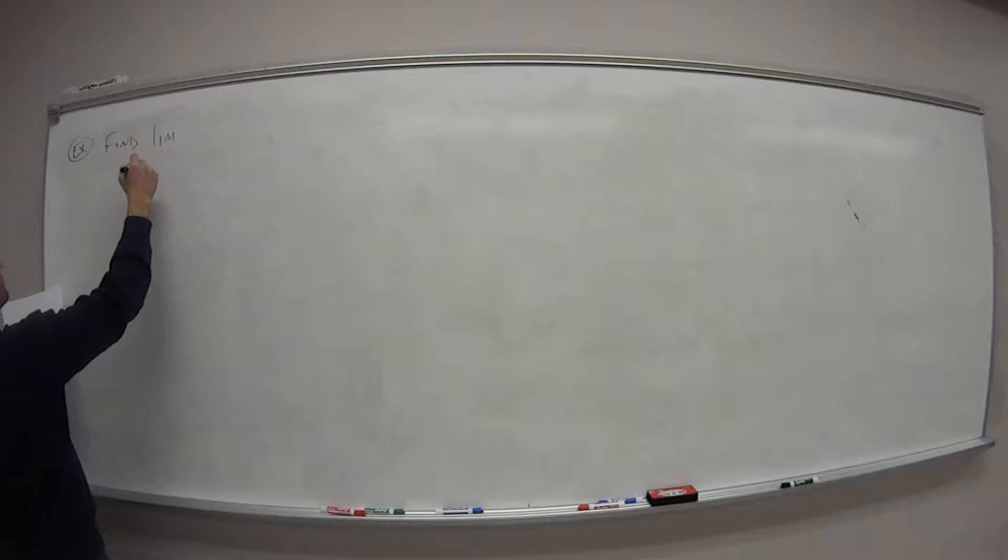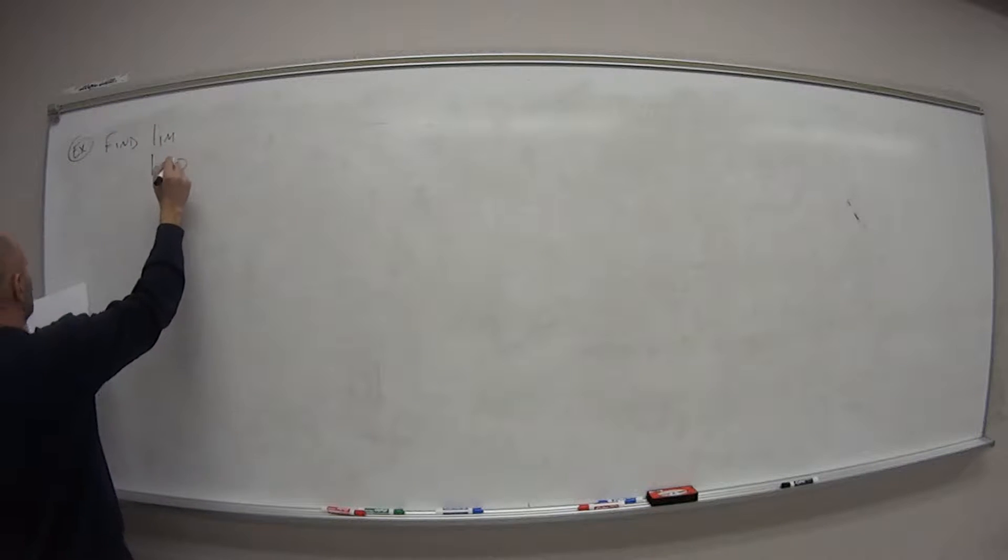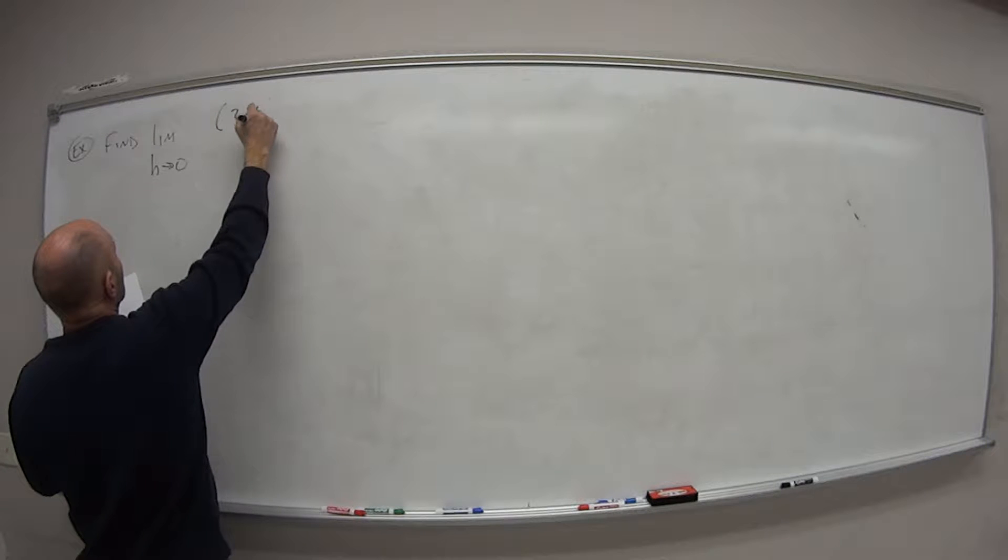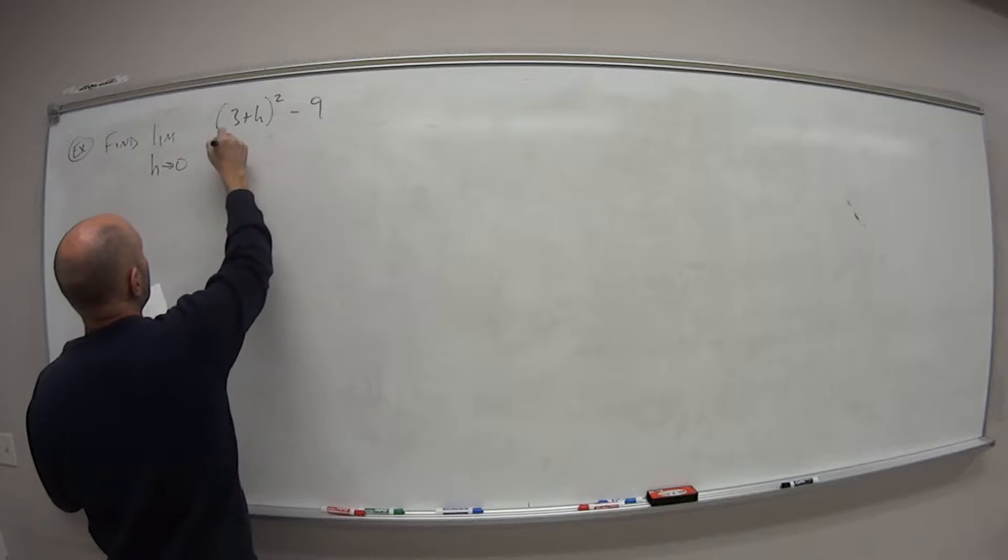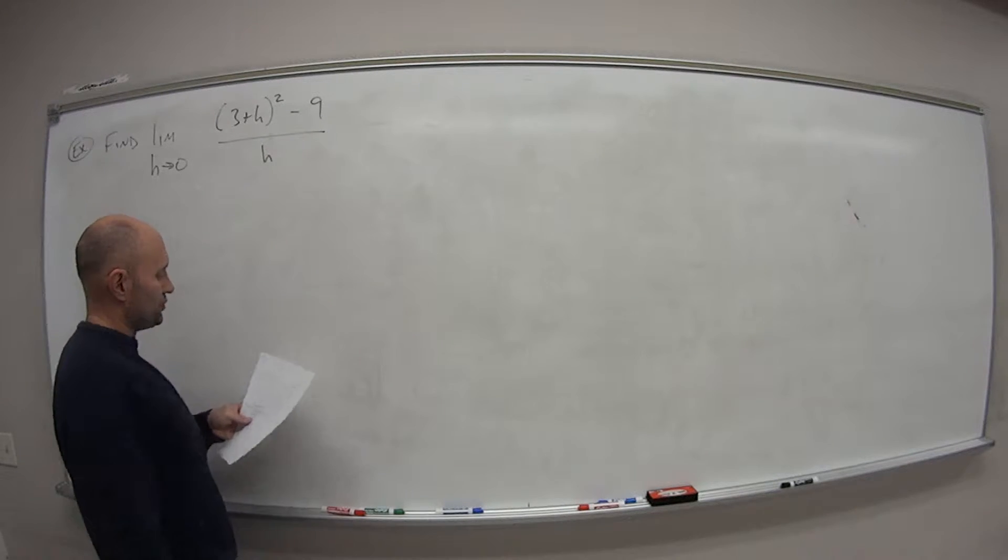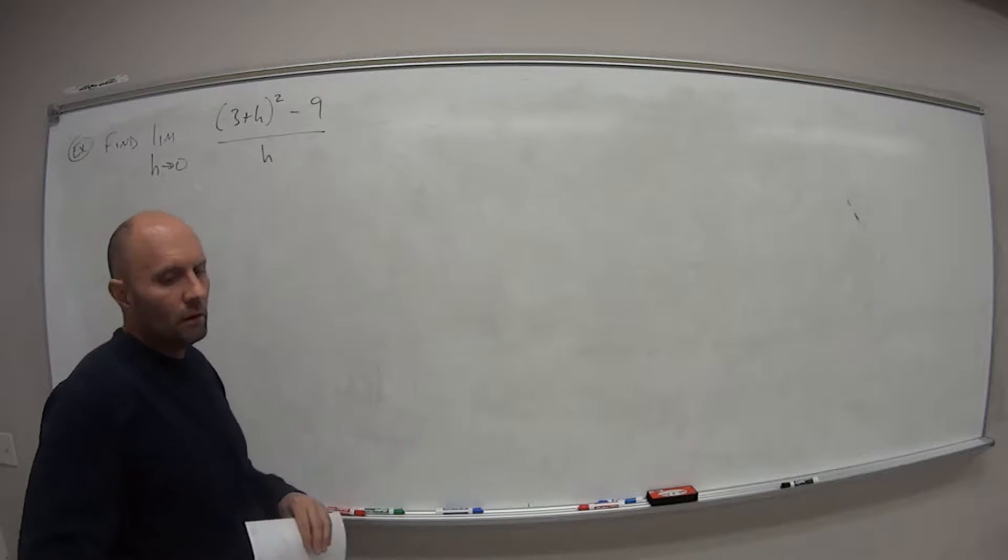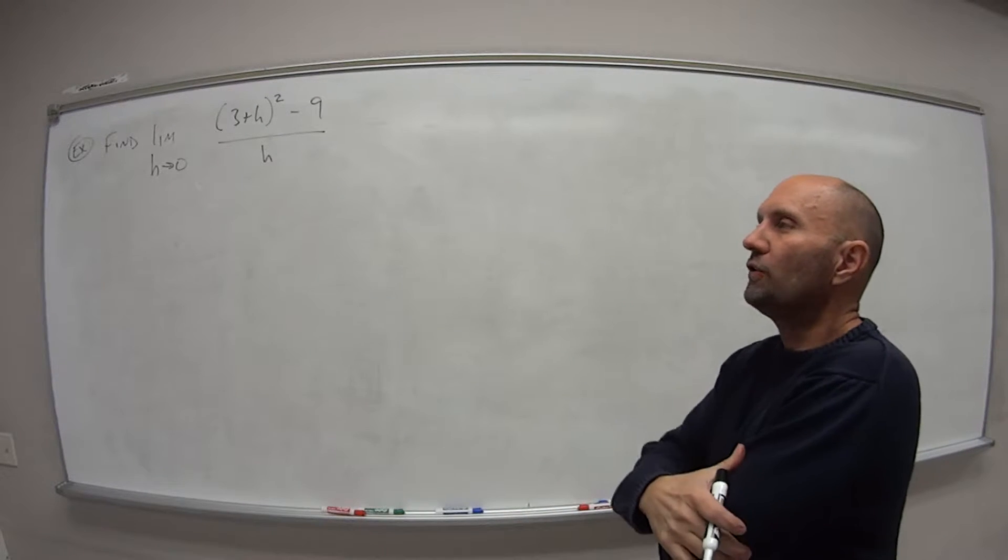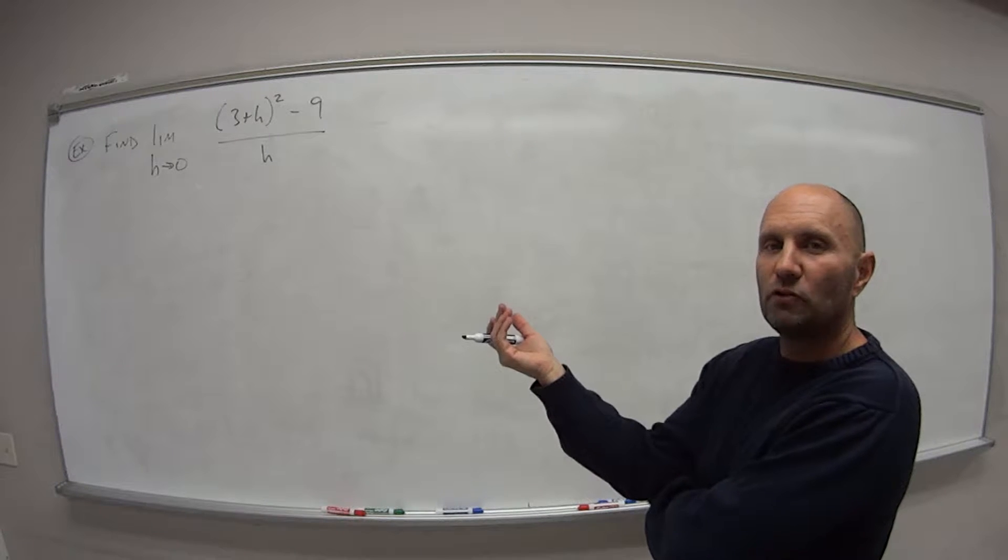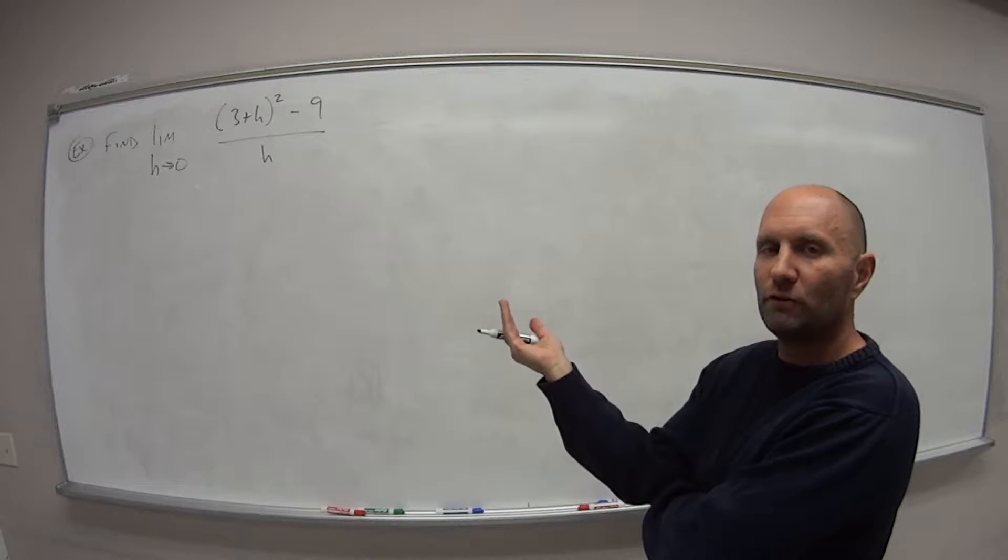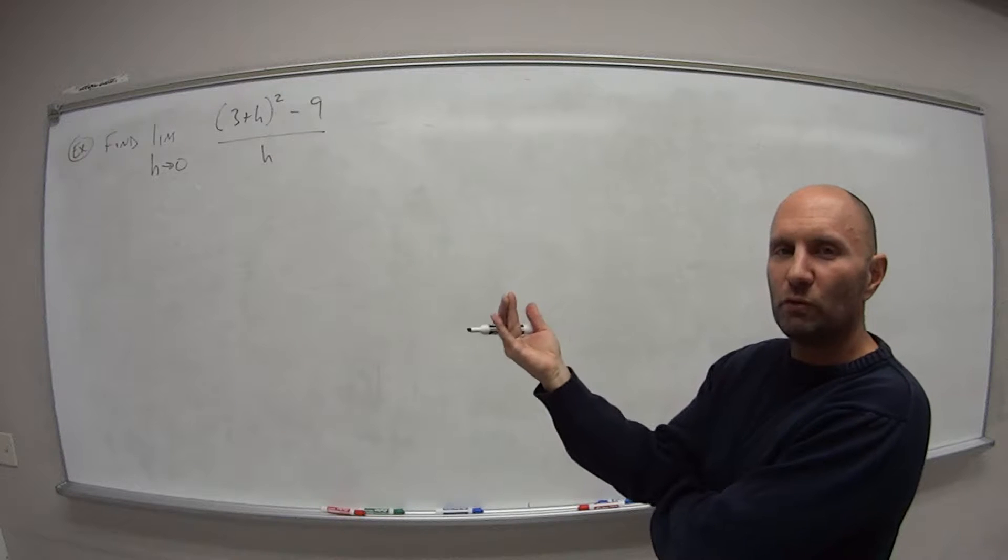So on this first one, we want to find the limit as h approaches zero of 3 plus h, the quantity squared, minus 9, all over h. So I'm going to let you try this one. Use the idea that we had in video two. We can't plug in zero, right? We can't use a direct substitution property because that gives us a zero in the denominator.